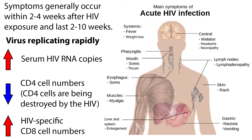During this time, the virus is replicating rapidly, and there is a corresponding rapid rise in serum HIV RNA copies, a decrease in CD4 cell numbers as the CD4 cells are being destroyed by the HIV, and a large increase in HIV-specific CD8 cell numbers.